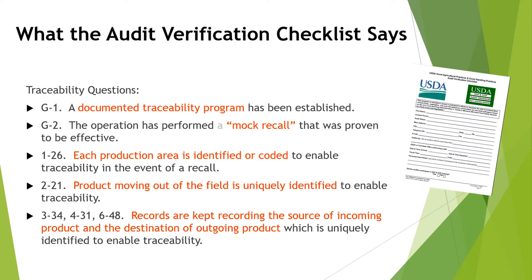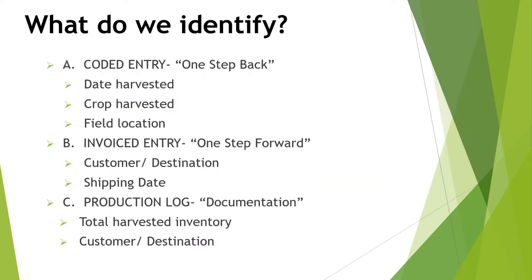We're going to explore and talk about these further. When we set up our system — one step back, one step forward — we're going to talk today about a coded entry, or in many cases you'll hear it described as a lot number. It can have several different items in it, but the ones that are required and that we concentrate on are: date harvested, crop harvested, and field location. We're going to show you how to set that up into a lot number entry so you can use it throughout your traceability system.